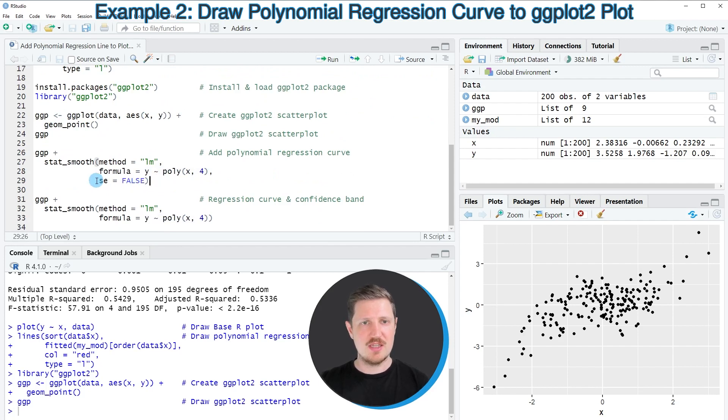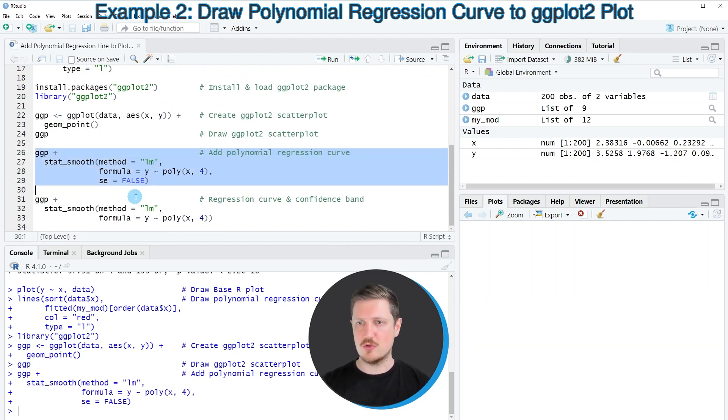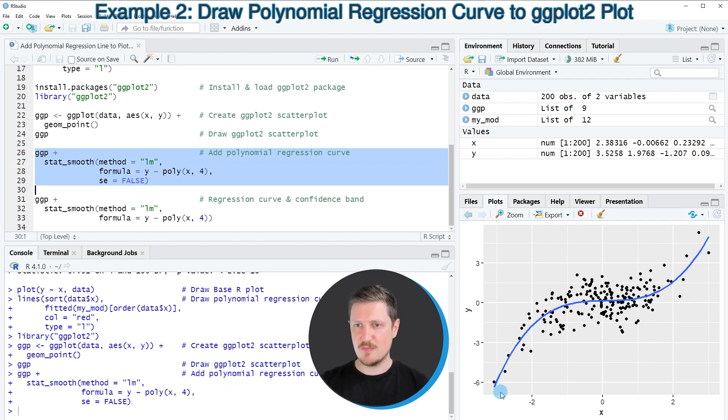In this case I'm also specifying the se argument to be equal to false, more on that later. So if you run lines 26 to 29 of the code, you can see at the bottom right that a new line is added to our plot and this line shows the polynomial regression line of our model.